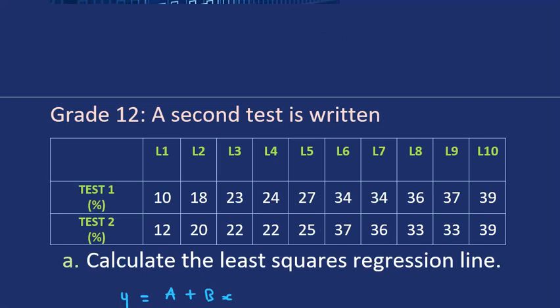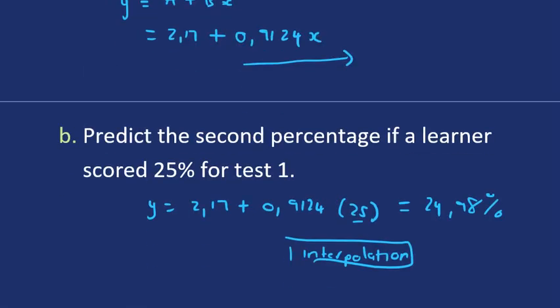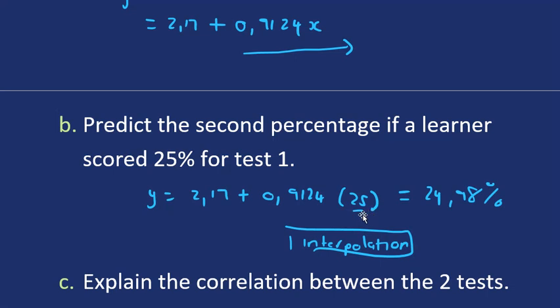To explain interpolation and extrapolation better, we look at our values here. See, the values start at 10 and they end at 39. So any value that we use within that range from 10 to 39 would be interpolation because we are sticking to our range. But if you were substituting 50, for example, and 50 is not within that range of the given values, then that would be extrapolation, outside the range. So we've done interpolation because we predicted for 25 and we got 24.98.